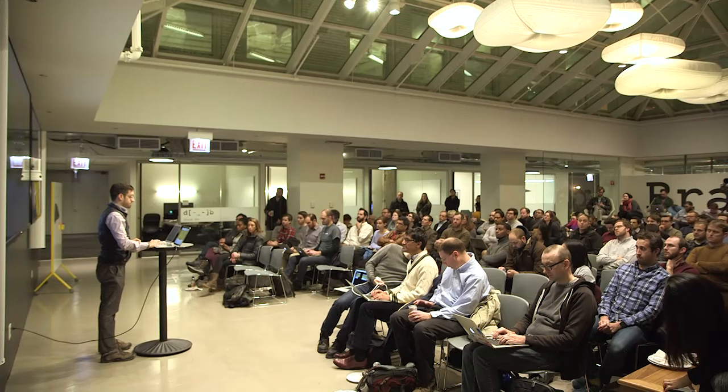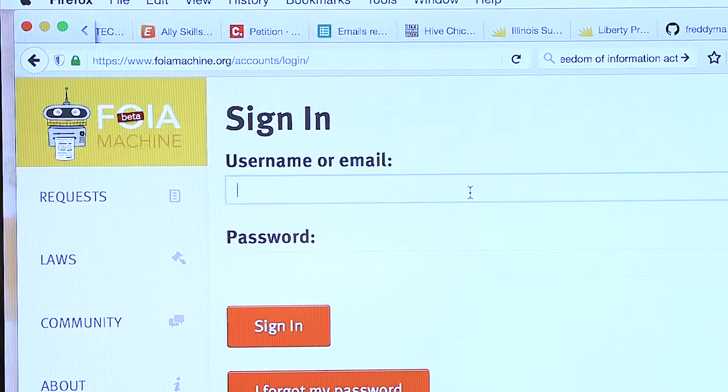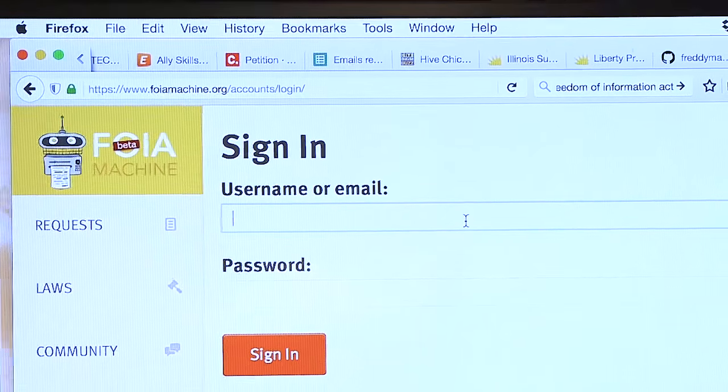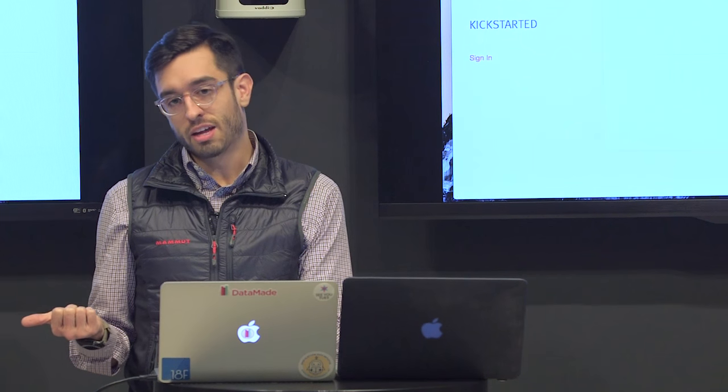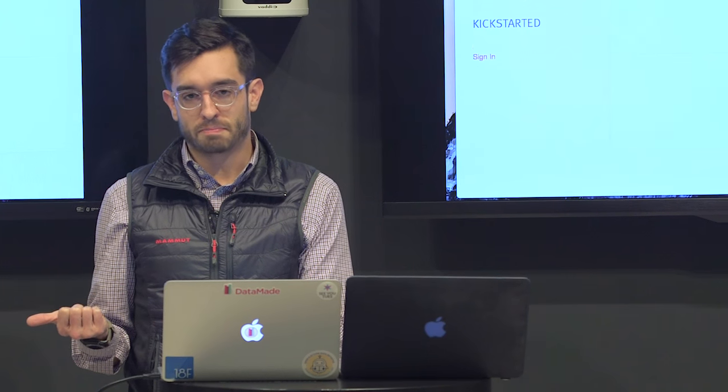FOIA Machine is a way for you to catalog your requests. If you're making just a couple, you don't really need it, but it saves your request so you have proof that you sent it. It has a database of most agencies and their FOIA contacts — the emails to which you send your requests.